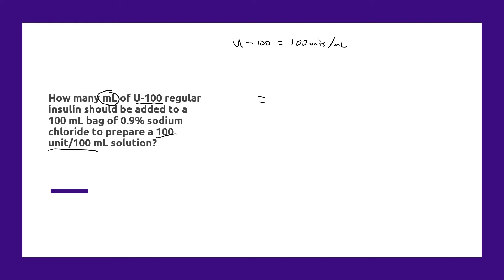But we would start by saying how many units do we need to add to get to a concentration of 100 units per 100 mL. So that's X units we need to add per a 100 milliliter bag to get to a concentration of 100 units per 100 mL.